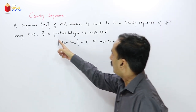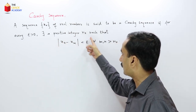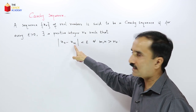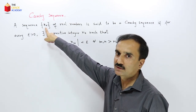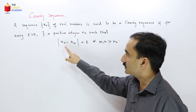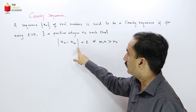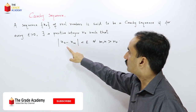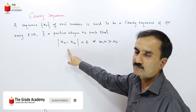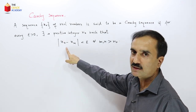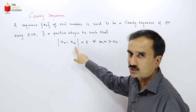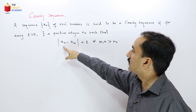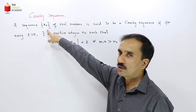Now if we look at this inequality, what information does it tell us? Here xn and xm are basically terms of the sequence, and this modulus gives us the distance between xn and xm. This shows that the distance between the terms of a Cauchy sequence is always very small — the terms of a Cauchy sequence are very close to each other. So a Cauchy sequence is a sequence in which the terms get closer and closer as the sequence progresses.